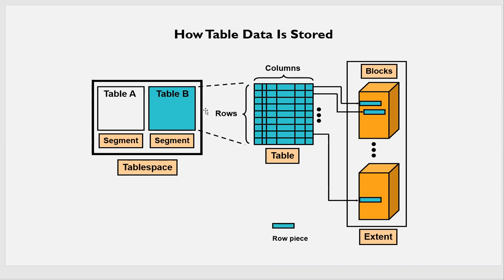Suppose if I take one particular tablespace, inside that tablespace I'll have segments — segment one, segment two, segment three, and so on. Each segment has a particular database object. For example, this segment has table A, and this segment has table B.